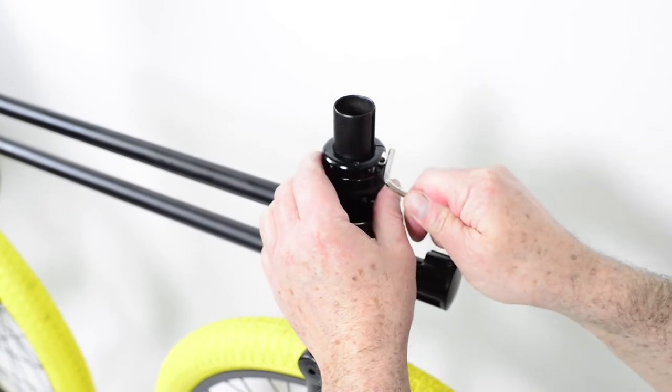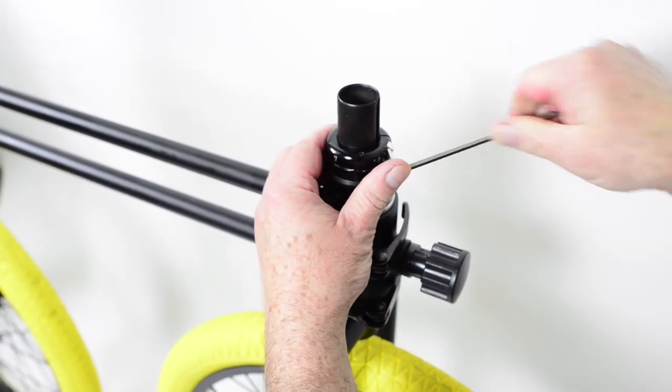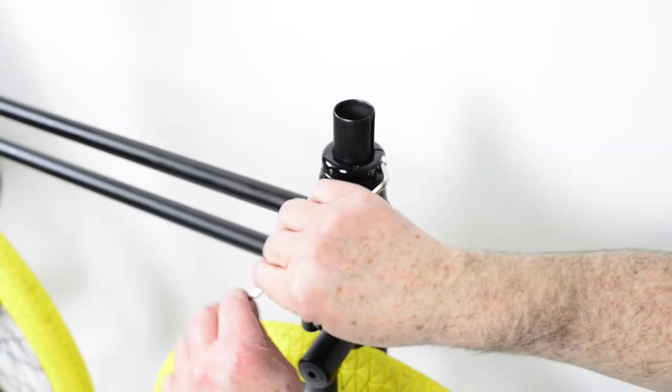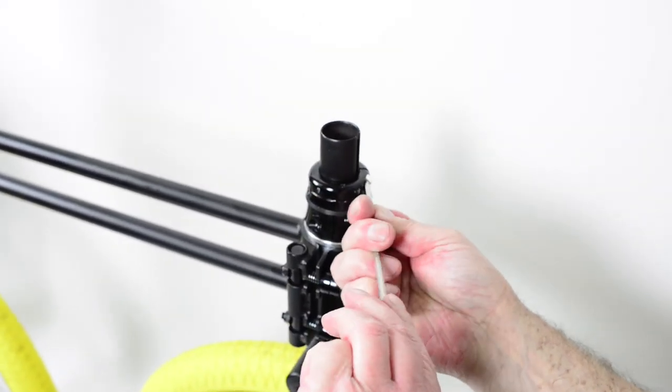Now you can loosen the twin unit cycle tool again with the hex key and take it off from the frame.